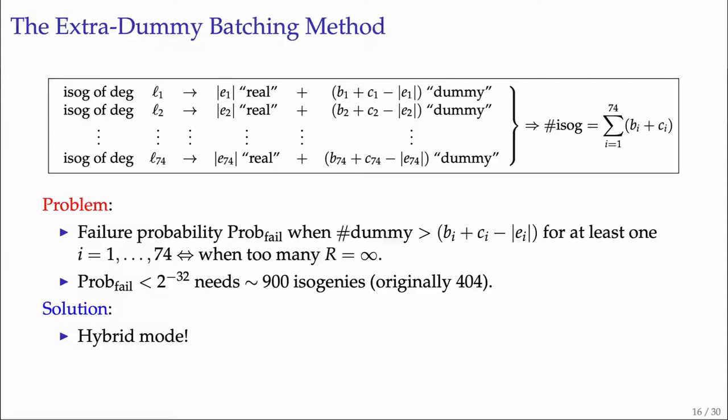However, this method has problems. There always exists a probability of failure in computing the correct Kodaira curve. When too many infinity cases happen, it can cause loss of real isogeny computations. Therefore, a large number of extra dummy isogenies are required to make this probability negligible. For example, it needs around 900 isogenies to make failure probability below 2^(-32), while before it was 404 computations. This greatly reduces efficiency while probability of failure still exists.